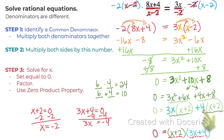or x equals, when we divide by 3, we get x equals negative 4 thirds. So after all of that, here are our two answers.